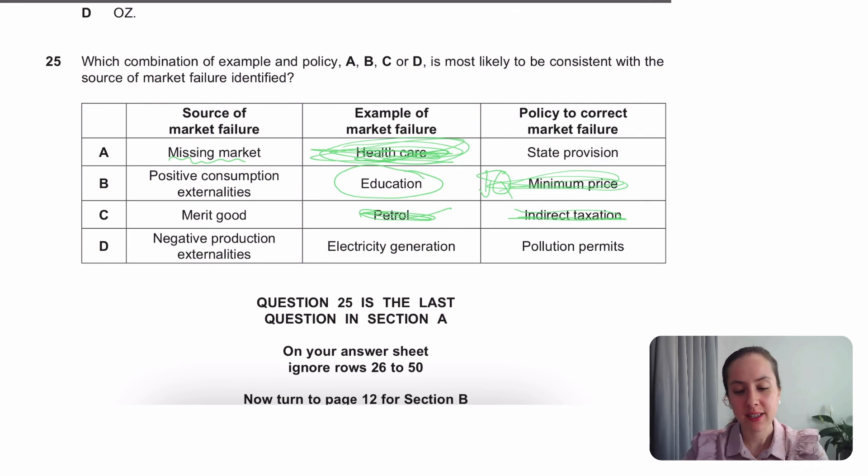Negative production externalities. Electricity generation, if it's burning coal, for example, could cause global warming. And yeah, you want to restrict the amount that companies can pollute. So D is the answer.